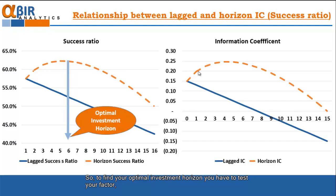So to find your optimal investment horizon, you have to test your factor, find its lagged IC, the horizon IC and check after how many periods the horizon IC starts to decay as well.